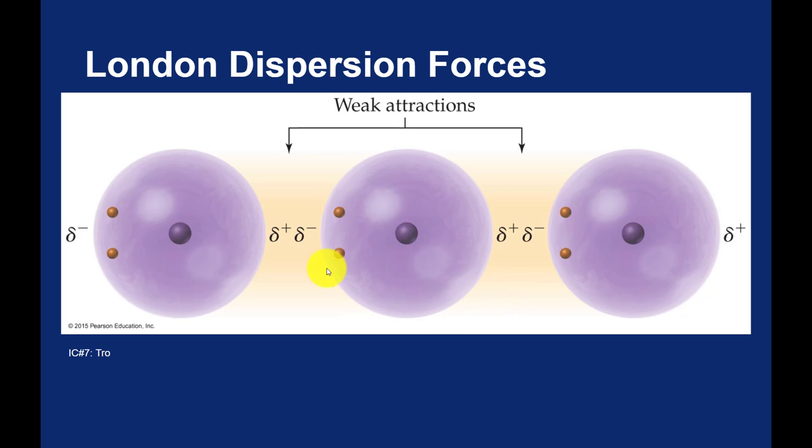So just the spontaneous polarity of this middle atom induced dipoles in the neighboring atoms. It forced the neighbors to become polar. And once that's done, now these atoms can attract each other. These are London dispersion forces.